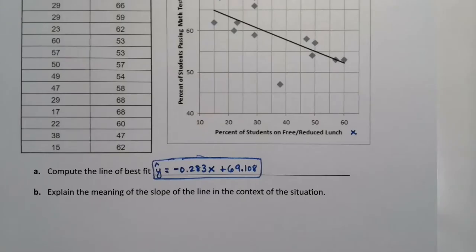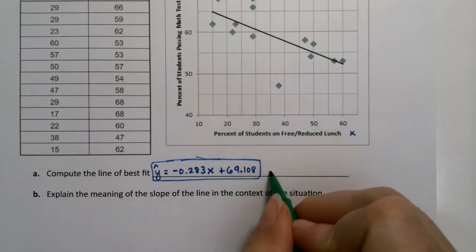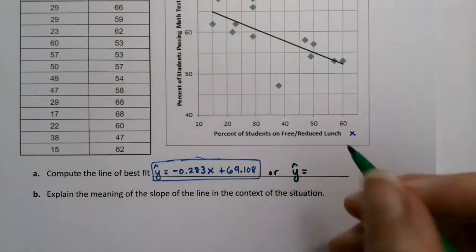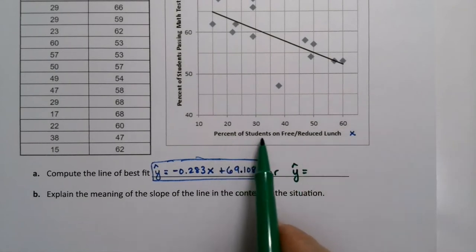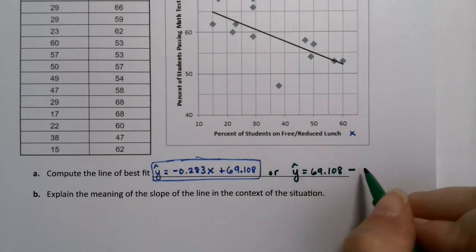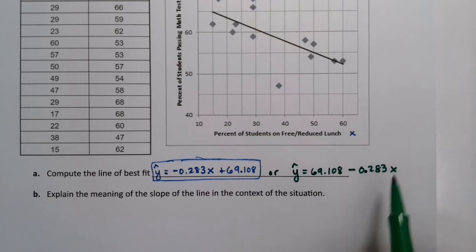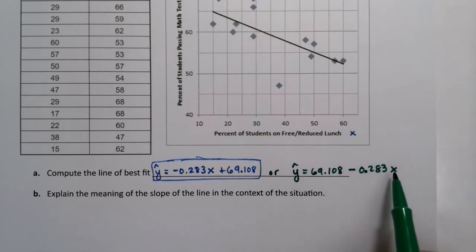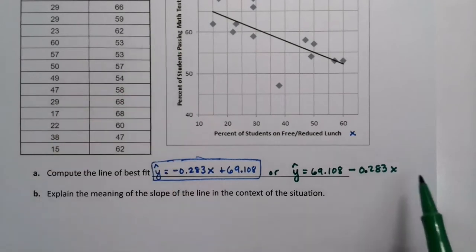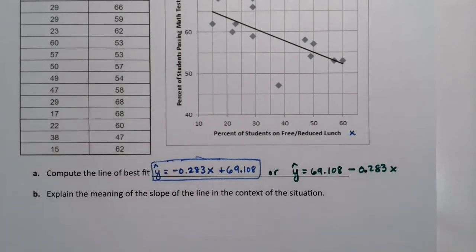So I'm going to write it the StatCrunch way, just so you can see. StatCrunch is writing it y hat equals, and they're writing it all out in words, percent on free-reduced lunch. So equals 69.108 minus 0.283x. And they wrote that all out in words as well. So for y, they wrote percent of students passing math, and for x, they wrote percent of students on free-reduced lunch.